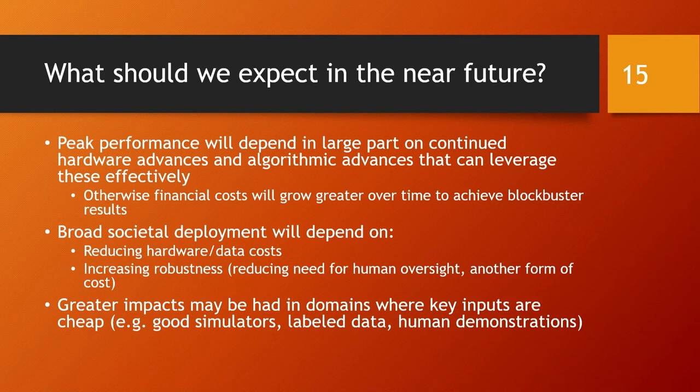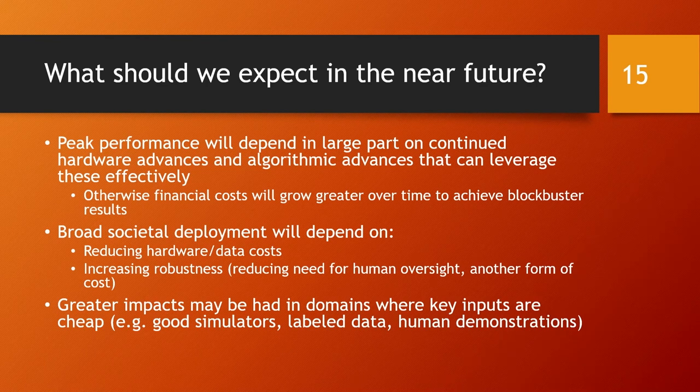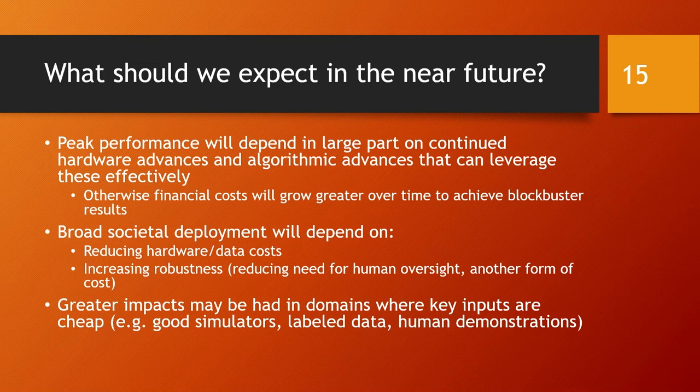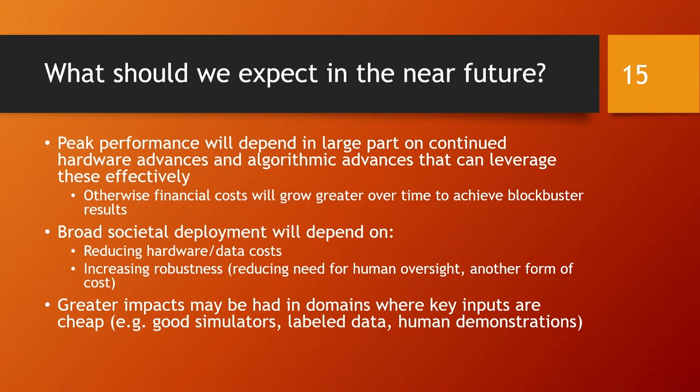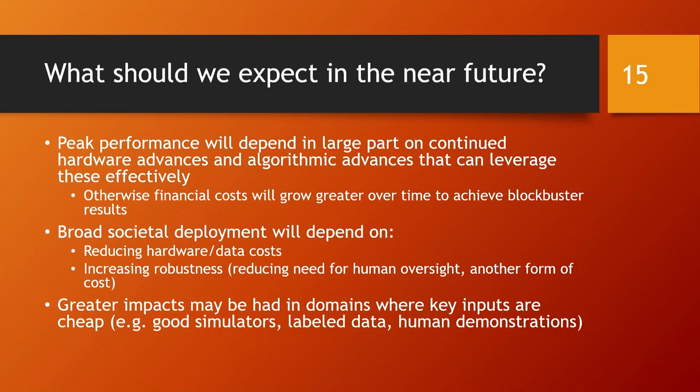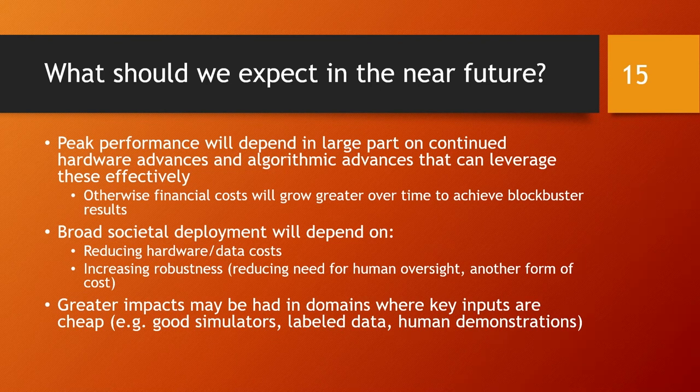And then finally, I think we can expect greater impacts in domains where these key inputs that I'm talking about are cheap: data, simulators. AlphaGo and Atari are both cases where you have a perfect simulation that you can run really fast and throw a lot of compute at the problem. Sometimes you can do that for physical problems, like if you have a good simulator of what a robot does, but it doesn't always work. And then finally, human demonstrations. So those are my thoughts, and I'll be happy to answer more detailed questions after my remarks. Thank you.